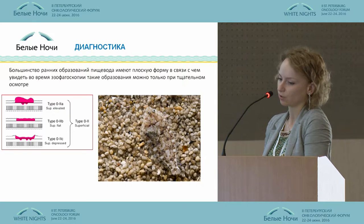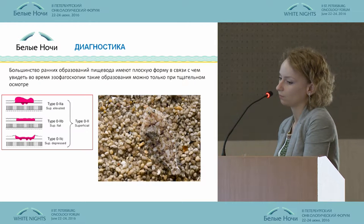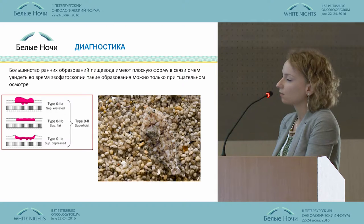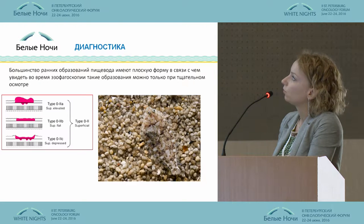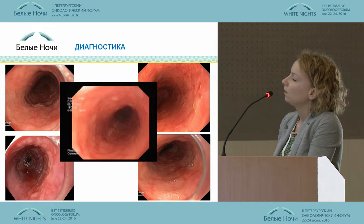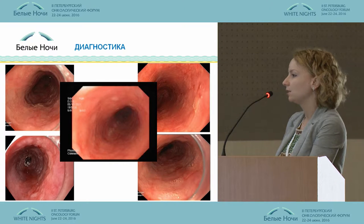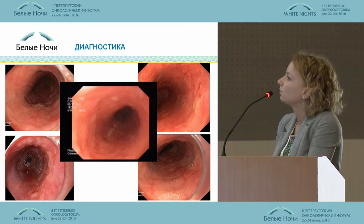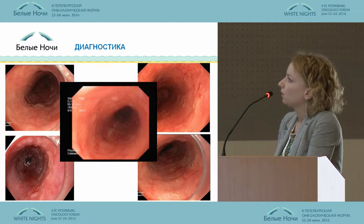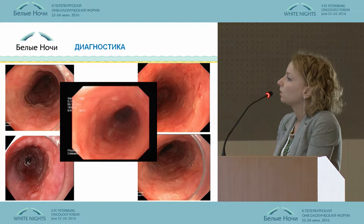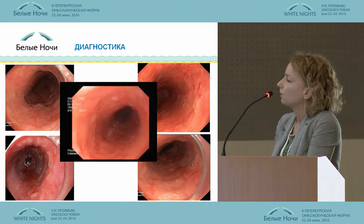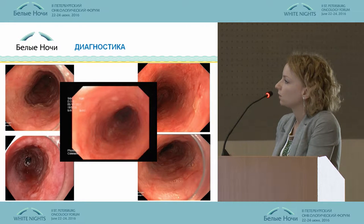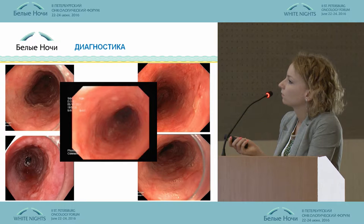What is the problem of early diagnostics? It is not only that our facilities are equipped insufficiently, but because endoscopists do not see all tumors unless thoroughly examining the esophagus. For instance, this patient was admitted last year to our department with a diagnosis of a 6mm neoplasm in the upper third of the esophagus. We found another 6mm focus, and it was moderately differentiated adenocarcinoma.